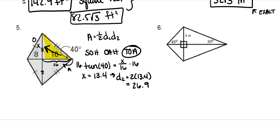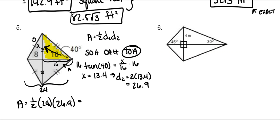So 26.9 is the other diagonal. The area is half times 24 (which is 8 plus 16) times 26.9. Don't use the rounded number — use the unrounded answer from your calculator. Press times, then use that previous answer, times 24, times 0.5. That way you get the most accurate answer rounding at the very end. We don't know the units, so it's units squared.